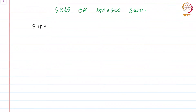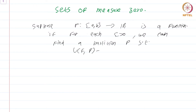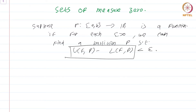Suppose f from [a,b] to R is a function. We want to understand if f is integrable or not. We already know that f will be integrable if for each epsilon greater than 0, we can find a partition P such that U(f,P) minus L(f,P) is less than epsilon. From the way in which these upper sums and lower sums are defined, it is clear that this quantity will be less than epsilon if and only if on each sub-interval determined by the partition, the variation of the function f is very small.